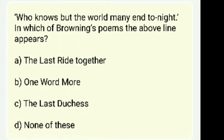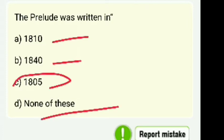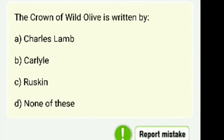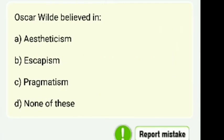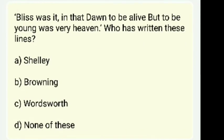Which lines of Browning's work can we see? And who wrote those lines — the answer is Wordsworth. Also: Tintern Abbey — when was it written? Your answer is 1798.